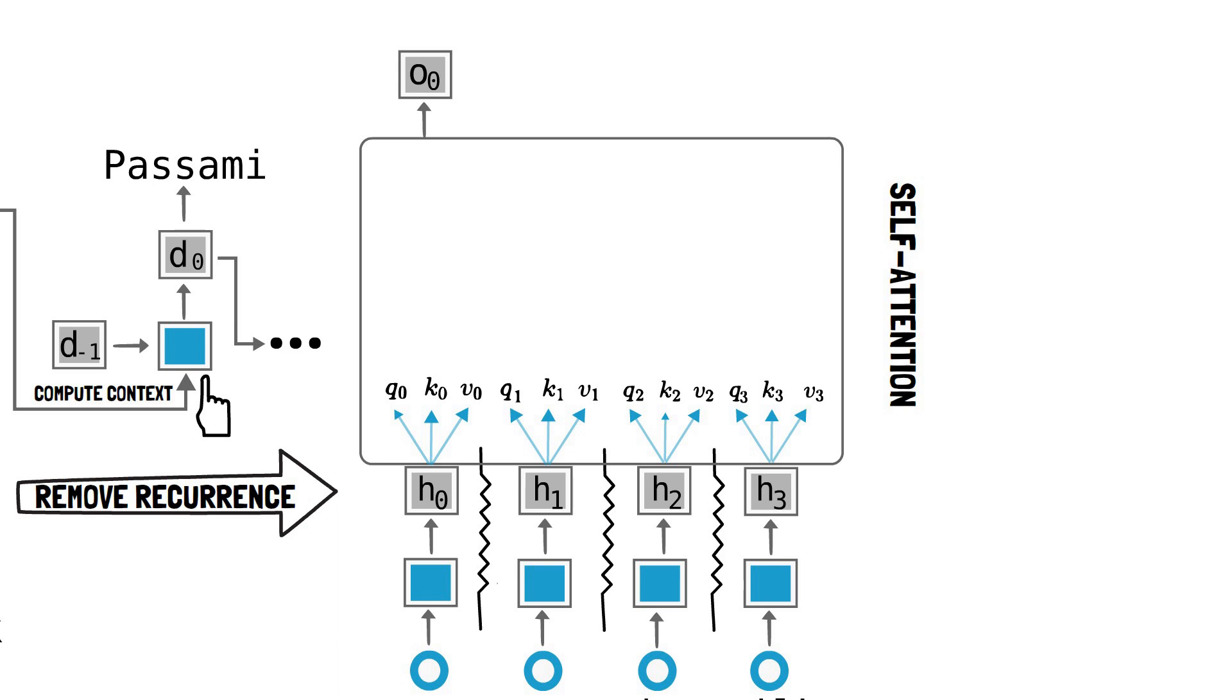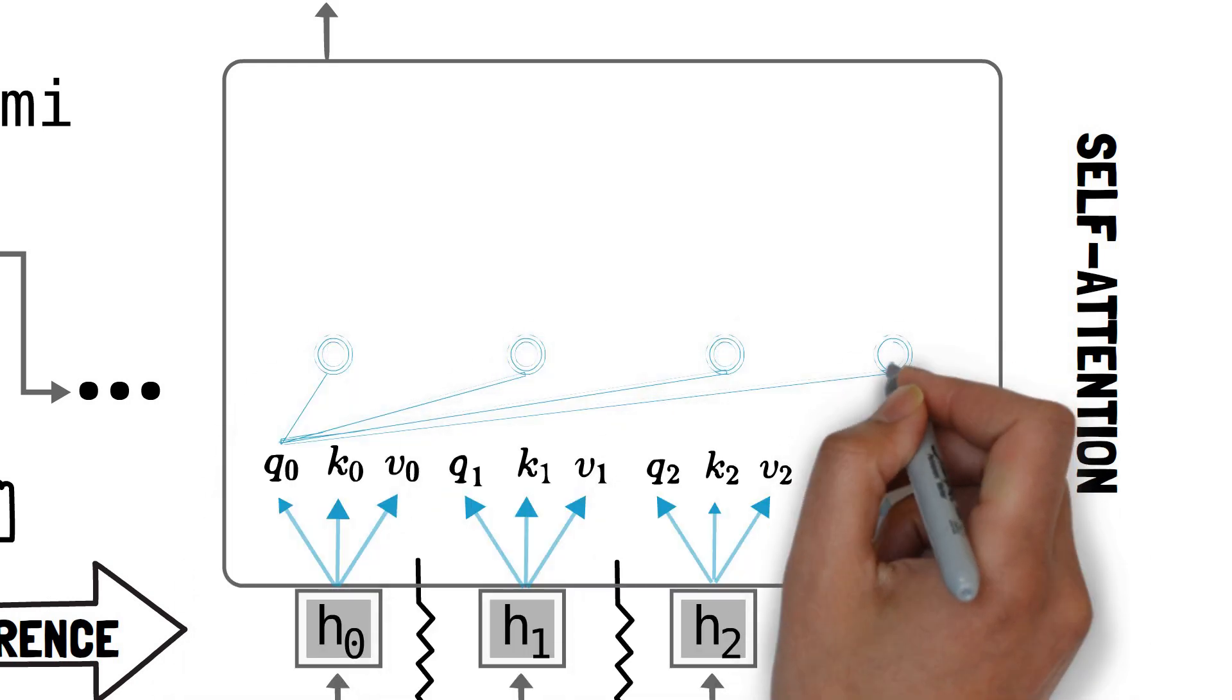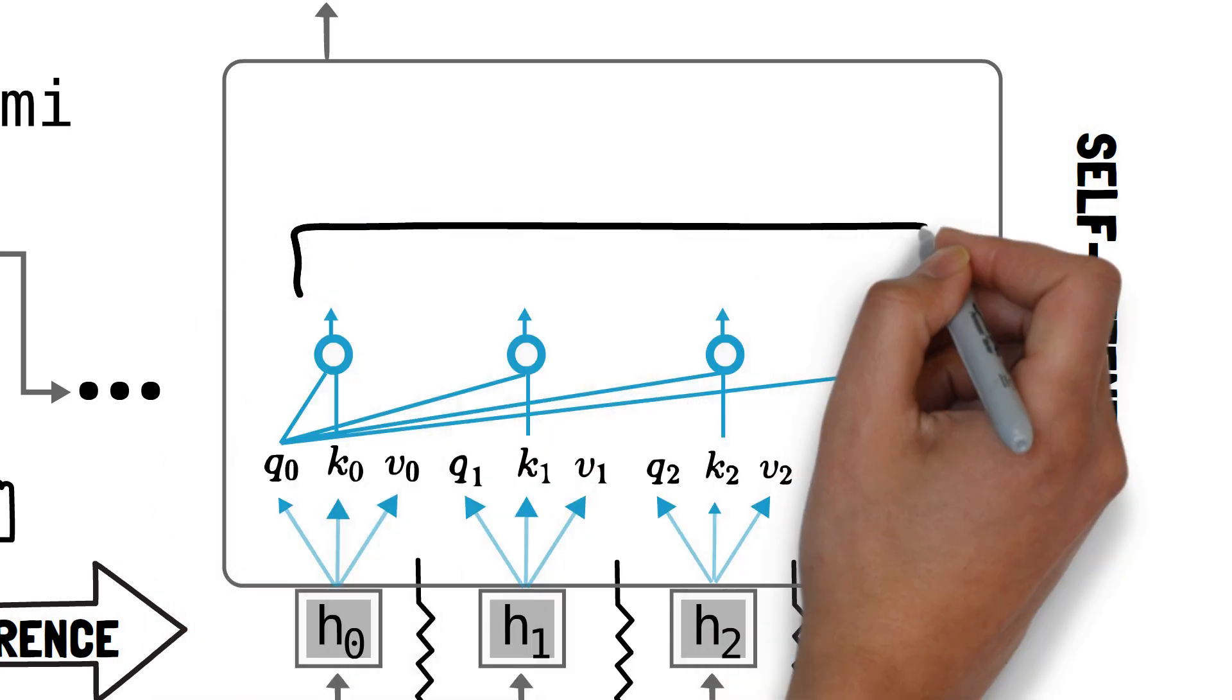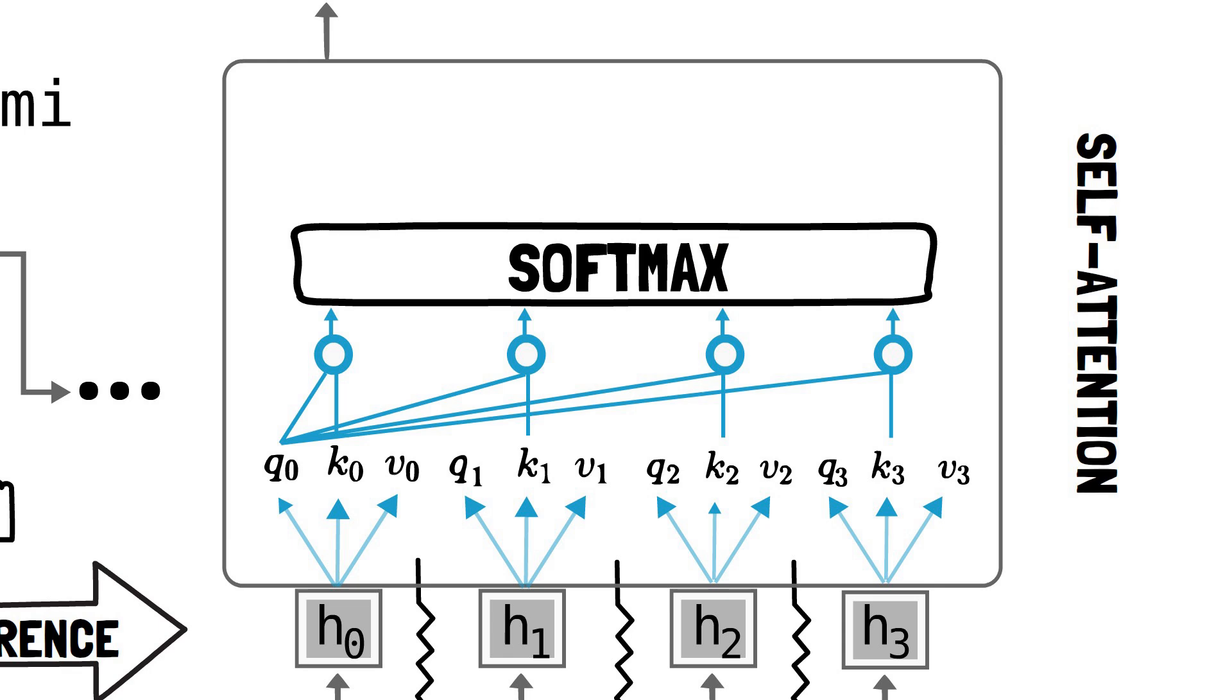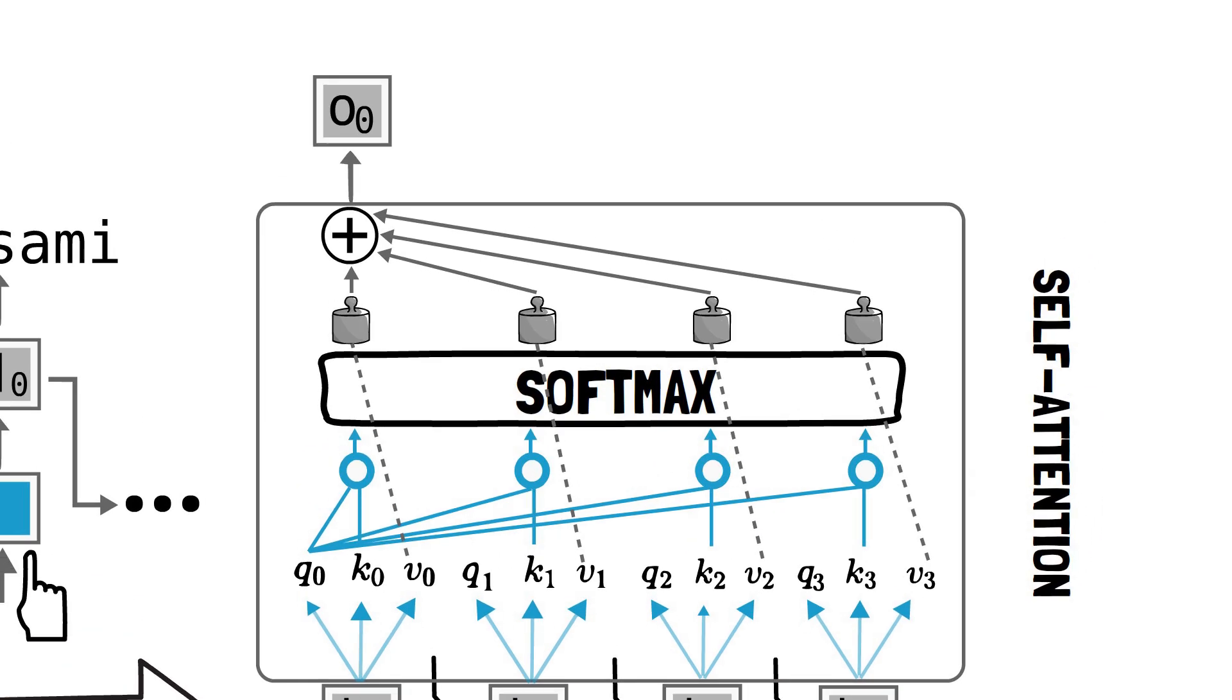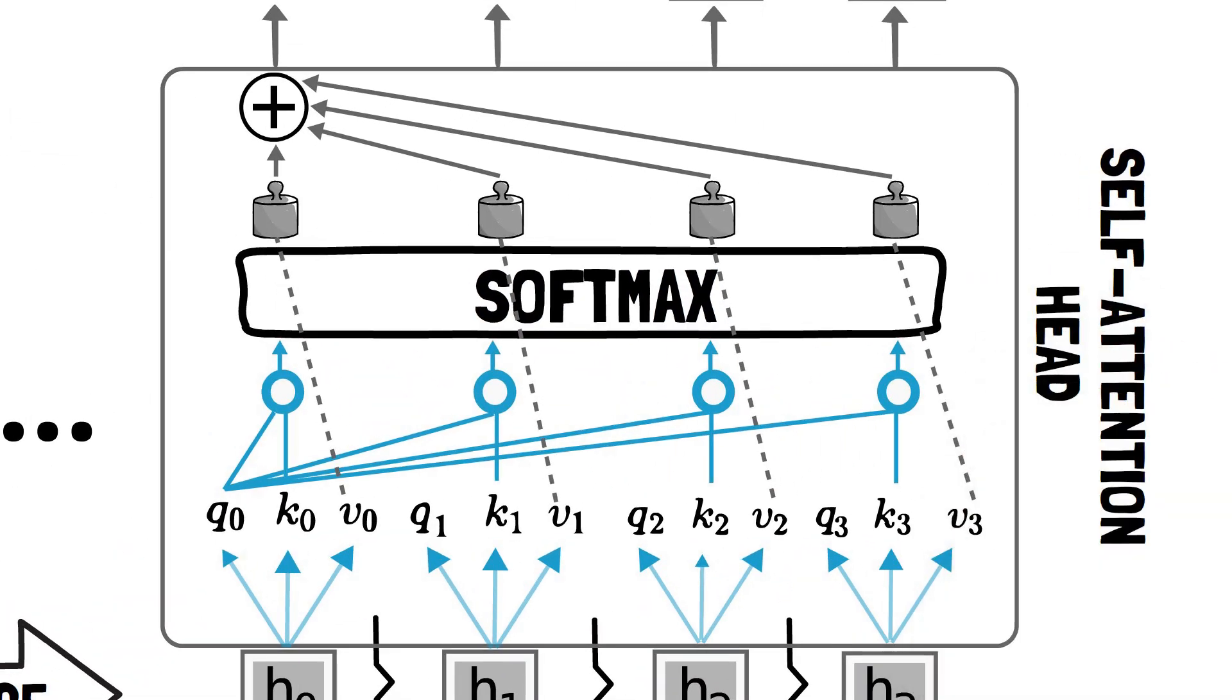Let's do this for the first word. We use the query for the first word, q0, and the keys for all input words to compute the raw attention scores. We pass them through a softmax to obtain attention weights. We then compute a weighted sum of the values with the attention weights, obtaining the hidden representations for the first word. We repeat these to compute the hidden representations for all the input words. We call this a self-attention head.